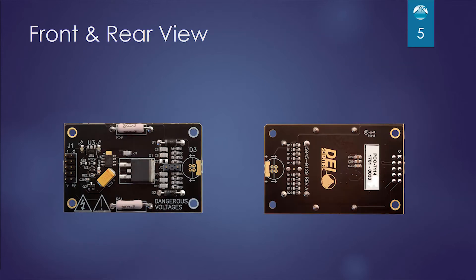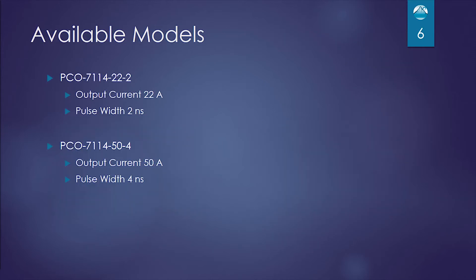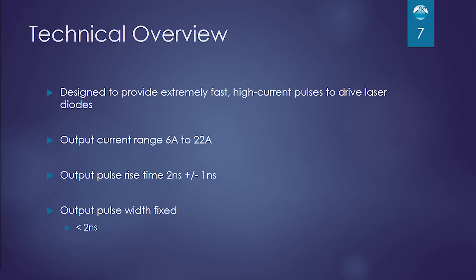Here is a front and rear view of the board. There are actually two models available. One of them is a 22-2, which is 22 amp output with a 2 nanosecond pulse width, or a 50-4, which is a 50 amp output at 4 nanosecond pulse width.